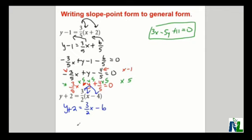I'm going to move everything to the left side of the equation again, and that will be negative 3 over 2x plus y plus 2 plus 6 is equal to 0. Finally, we have negative 3 over 2x plus y plus 8 is equal to 0.